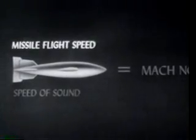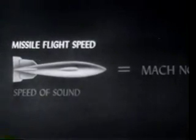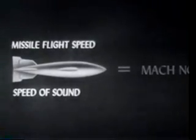The ratio of missile flight speed to a given speed of sound is called its Mach number. Aerial flight speeds are divided into three zones: subsonic, transonic, and supersonic. In the subsonic zone, Mach numbers are usually less than 0.8. In the transonic zone, the Mach numbers are from approximately 0.8 to about 1.2. In the supersonic zone, Mach numbers are usually greater than 1.2.